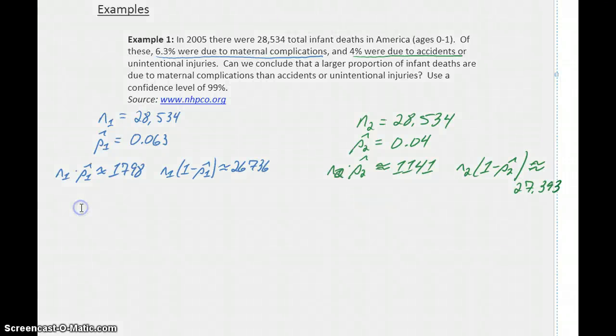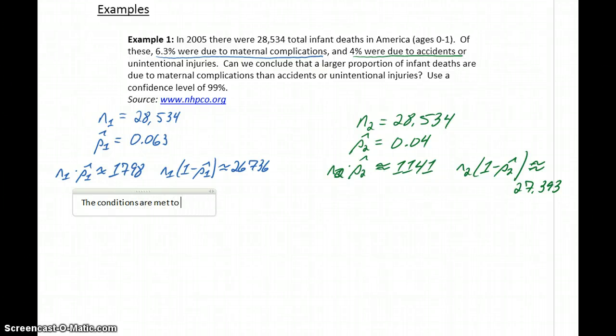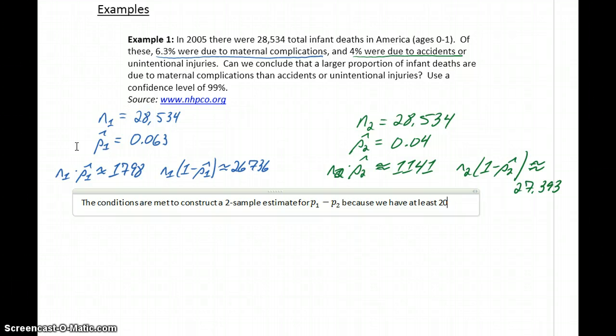So now we can write a complete answer to this problem. We can start off by saying the conditions are met to construct a two-sample estimate for P1 minus P2 because we have at least 10 successes and 10 failures in each of the two samples.